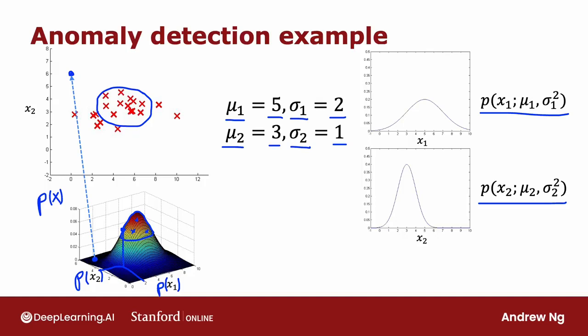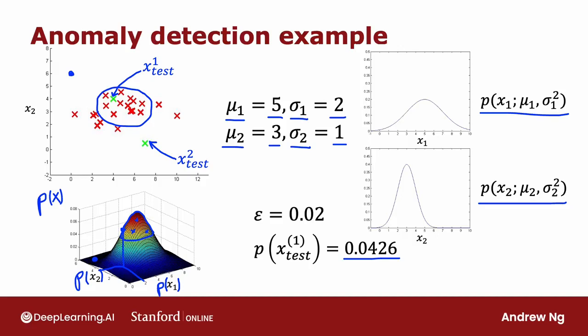Now, let me pick two test examples. The first one here, I'm going to write as x test1, and the second one down here as x test2. And let's see which of these two examples the algorithm will flag as anomalous. I'm going to pick the parameter epsilon to be equal to 0.02. And if you were to compute p(x test1), it turns out to be about 0.04. And this is much bigger than epsilon, and so the algorithm will say, this looks okay, doesn't look like an anomaly.